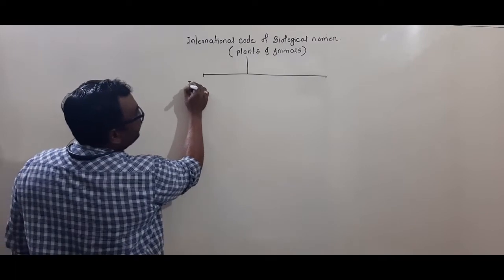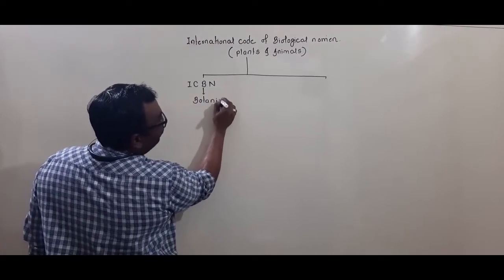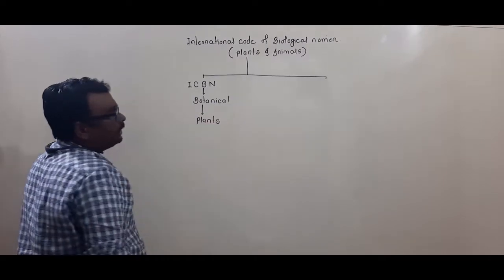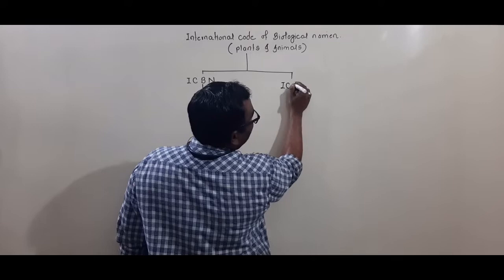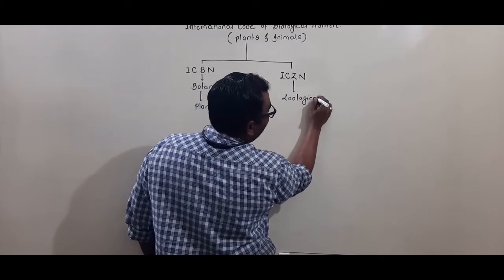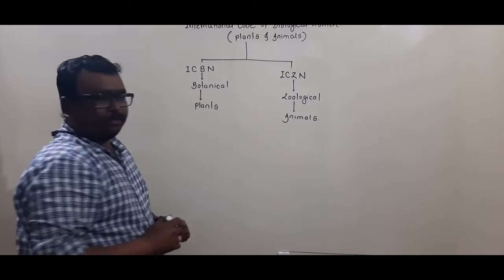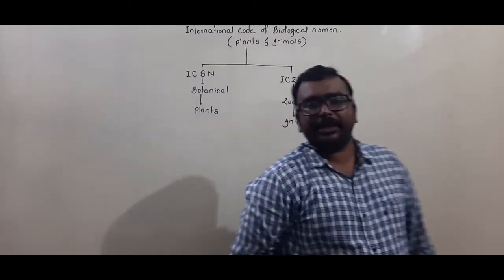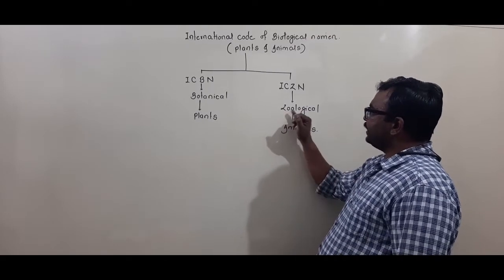The first branch is called ICBN — the International Code of Botanical Nomenclature — which gives the principles related to plants. The second branch is ICZN — the International Code of Zoological Nomenclature — which is for animals. So ICBN deals with plant nomenclature and ICZN deals with animal nomenclature.